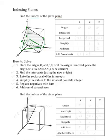The first step is to choose the origin, which we will place right here at 0,0,0. Now the next step will be to find the intercepts. Starting at our origin, we will travel along the x-axis until the plane intercepts it, which it does at 1. Going back to our origin, we will travel along the y-axis until the plane intercepts it, which it does at 1. Finally, we will go back to our origin and travel along the z-axis until the plane intercepts it, which it does at ½.